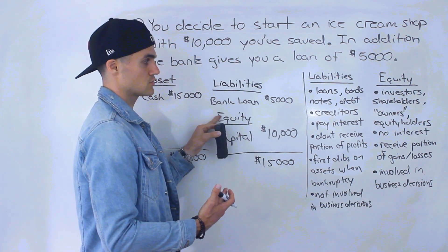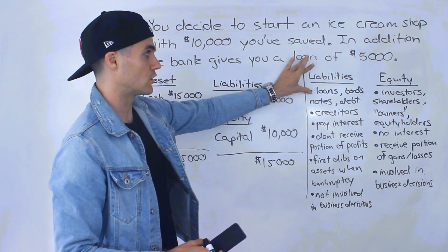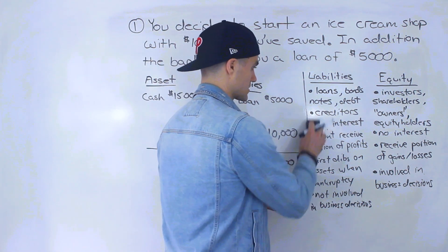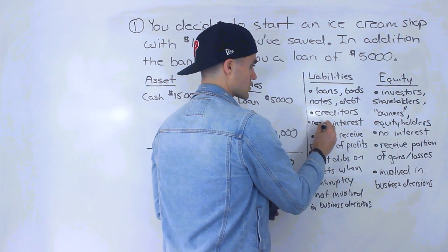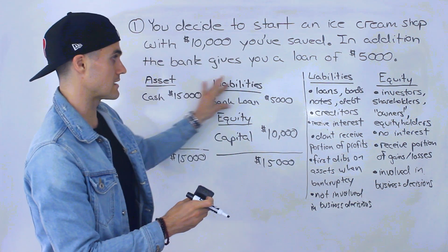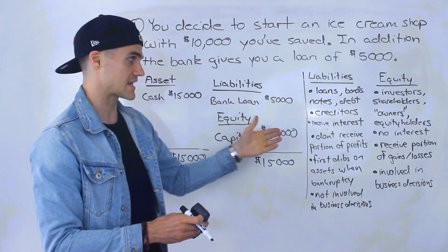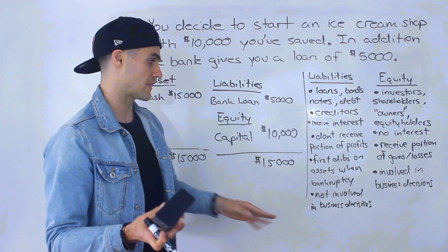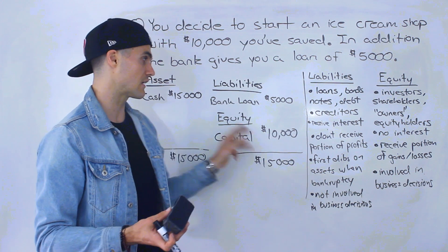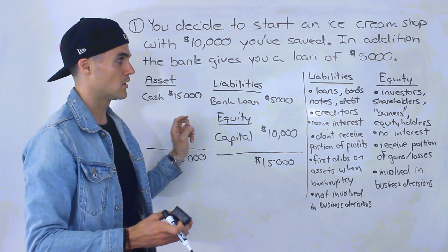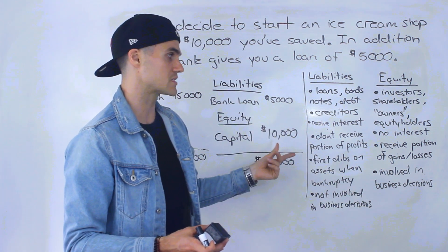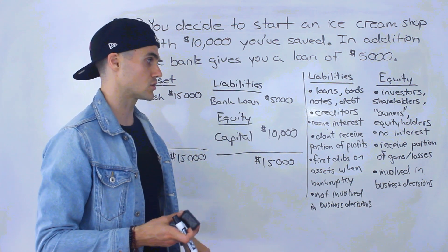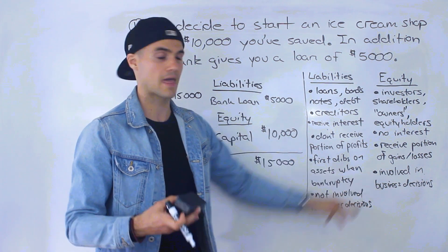Just a couple of differences between these two categories. Liabilities are like loans — creditors receive interest, but they don't receive a portion of the profits, and they aren't involved in the business decisions. But if things go bad, they get first dibs on assets if there's a bankruptcy. While equity holders don't receive interest like creditors do, but they receive a portion of the business if it grows, a portion of the losses if it loses money, and it's up to them to actually run the business and make the decisions.